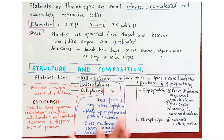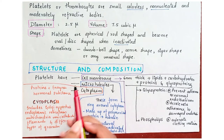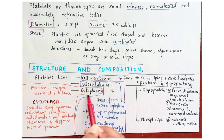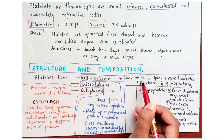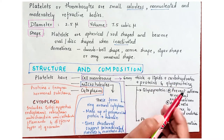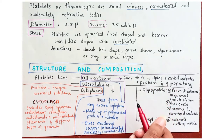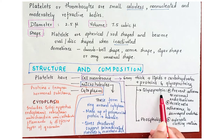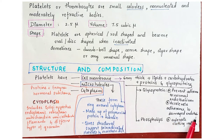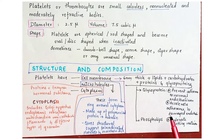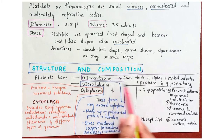The structure and composition of platelets include three parts: cell membrane, microtubules and cytoplasm. The cell membrane is 6 nanometers thick and has lipids, carbohydrates, proteins and glycoproteins. Physiologically, glycoprotein prevents adherence of platelets to normal endothelium but accelerates adherence to collagen and damaged endothelium in ruptured blood vessels. Phospholipids accelerate clotting reactions.